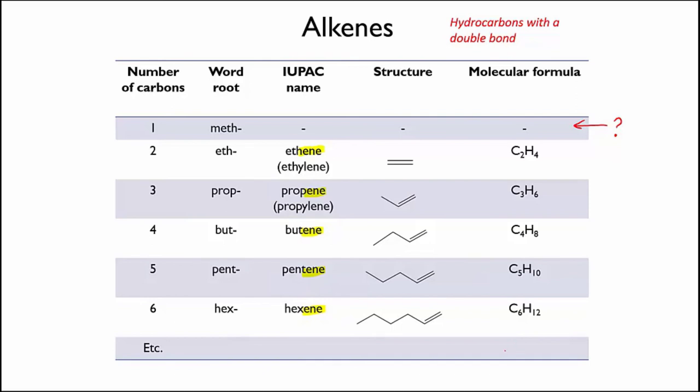Now have a look at the molecular formula for alkenes. As with alkanes, they follow a pattern — can you see it? What would be the formula for an alkene with N carbons? Well, this one's pretty easy. If there is one double bond in the molecule, two hydrogens must have been removed. So an alkene has two fewer hydrogens than an alkane, meaning that alkenes have the formula CnH2n.